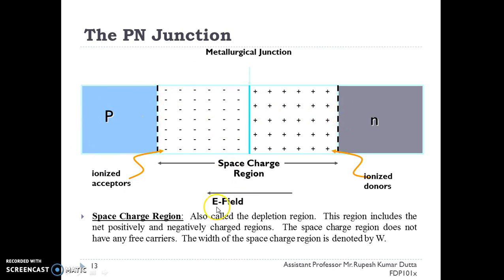This is known as a PN junction. If we forward bias this device with positive voltage to p-side and negative voltage to n-side, then the depletion width will be reduced. If we reverse bias it with negative voltage to the p-side and positive voltage to the n-side, then this region will increase.